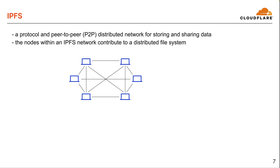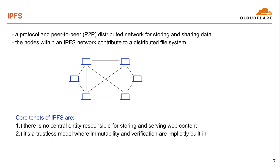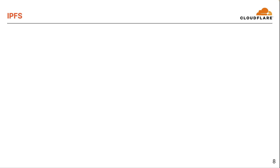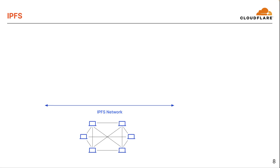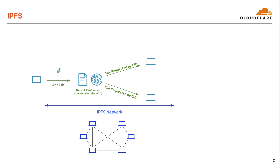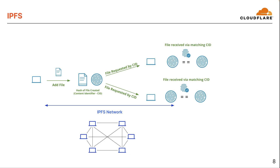Starting with IPFS, this is a protocol and peer-to-peer distributed network for storing and sharing data. The nodes within an IPFS network contribute to a distributed file system. The core tenets of IPFS are there's no central entity responsible for storing and serving web content, and it's a trustless model where immutability and verification are implicitly built in. We have an IPFS network with multiple nodes. When we add a file, IPFS creates a hash of the file, or a content identifier. When a user requests the content using a CID, they always know what they intended to receive is actually what they receive because the hashes or content identifiers match. If the file is changed, a new object gets created with a different CID.